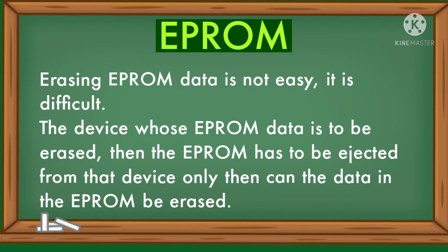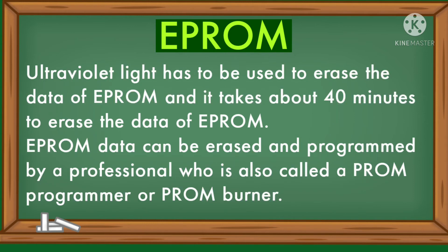Erasing EPROM data is not easy — it is difficult. The device whose EPROM data is to be erased requires the EPROM to be ejected from that device first; only then can the data in the EPROM be erased. Ultraviolet light has to be used to erase the data of EPROM, and it takes about 40 minutes. EPROM data can be erased and programmed by a professional, also called a PROM programmer or PROM burner.